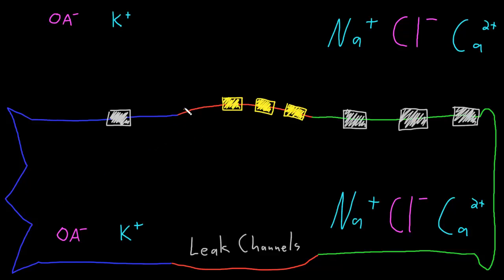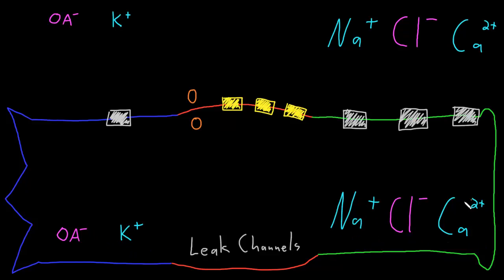First, let's consider a neuron with no resting potential — so it's not more positive outside or more negative inside the membrane. We'll consider that all these key ions have the same concentration inside and outside the neuron, so that there are no concentration gradients for organic anions, potassium, sodium, chloride, or calcium.